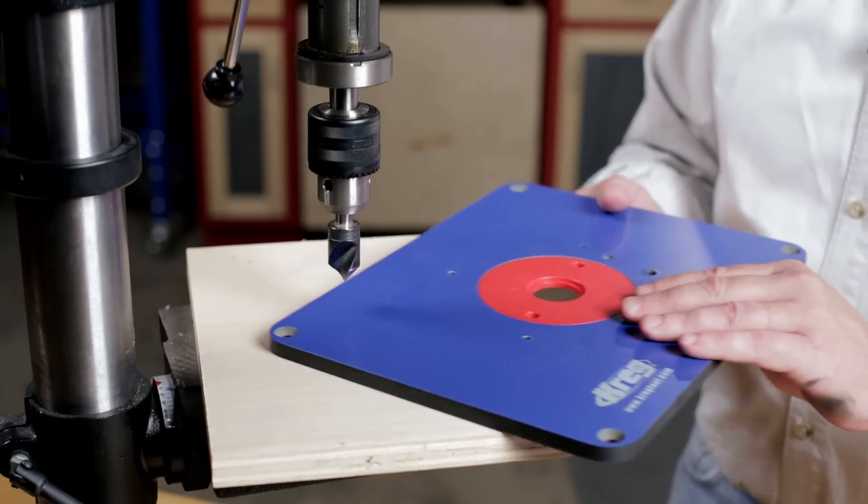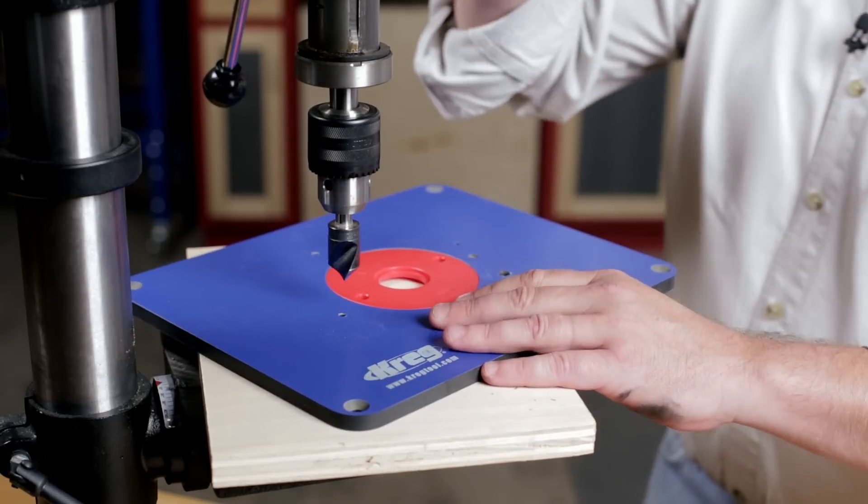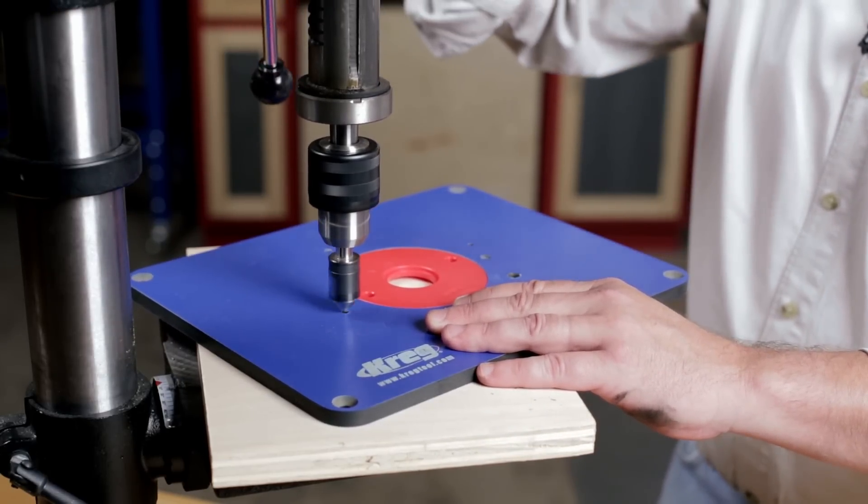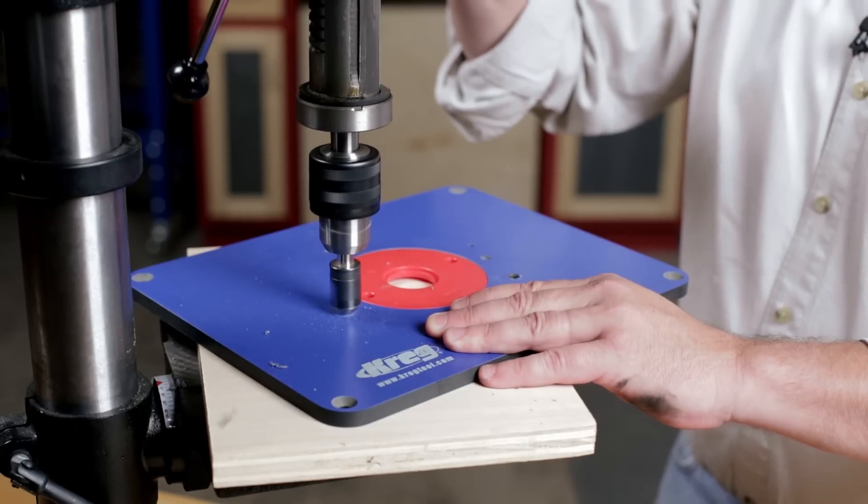After drilling the holes, flip the plate over and countersink the mounting holes so that the screw heads will sit just slightly below the plate surface.